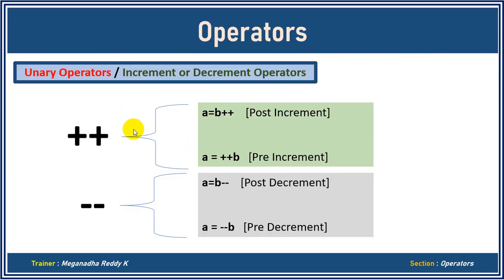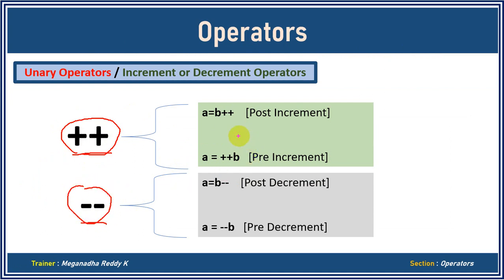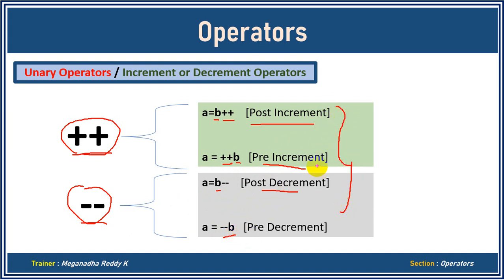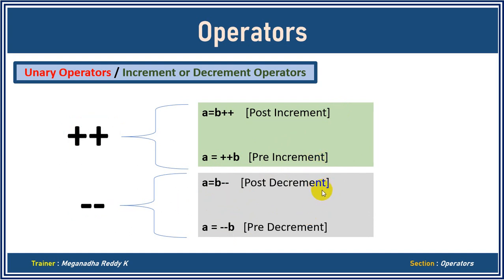These operators primarily have two things: plus-plus and minus-minus. Plus-plus is called increment and minus-minus is called decrement. When you write plus-plus after the operand, we call it post-increment. When you write plus-plus before the operand, we call it pre-increment. Similarly, minus-minus after the operand is post-decrement, and before the operand is pre-decrement.